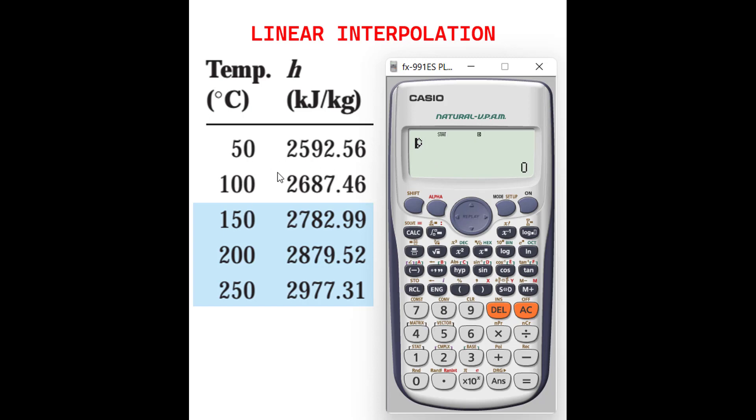And then let's say we want to have the enthalpy value at 70 degrees C, so I will write 70, press y-cap, and equal. So the enthalpy value at 70 degrees C is 2630.52.